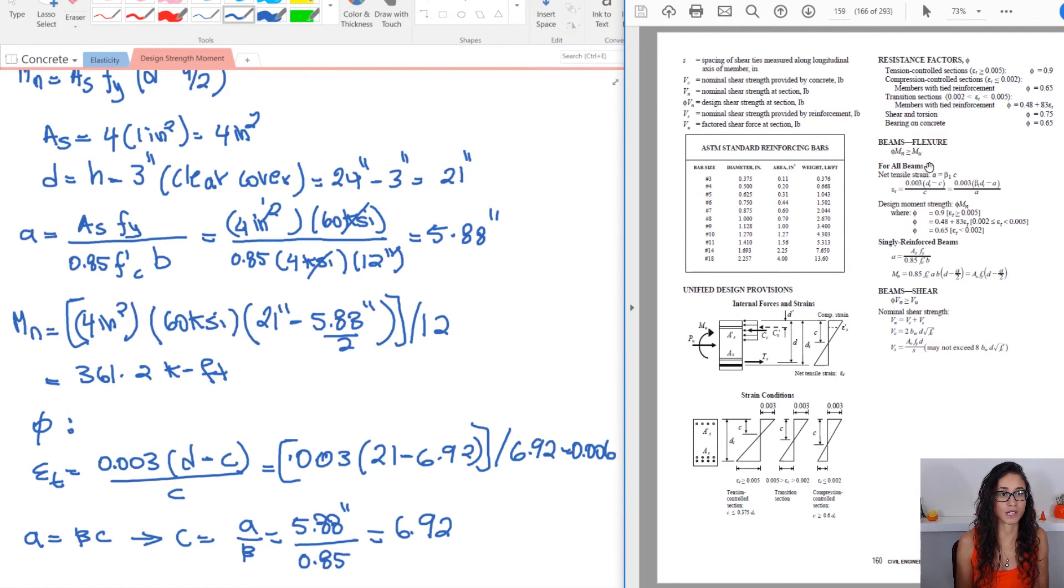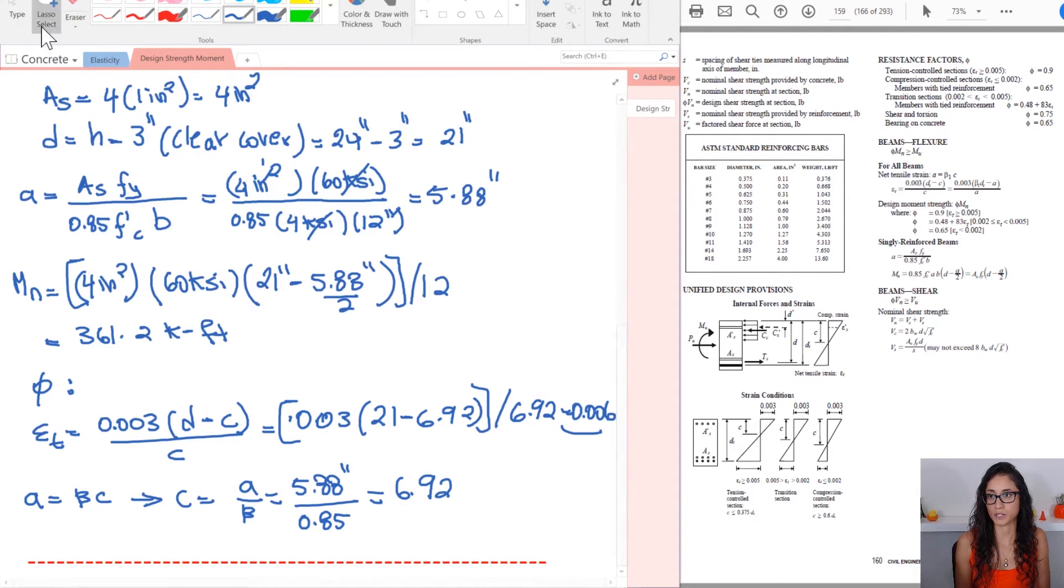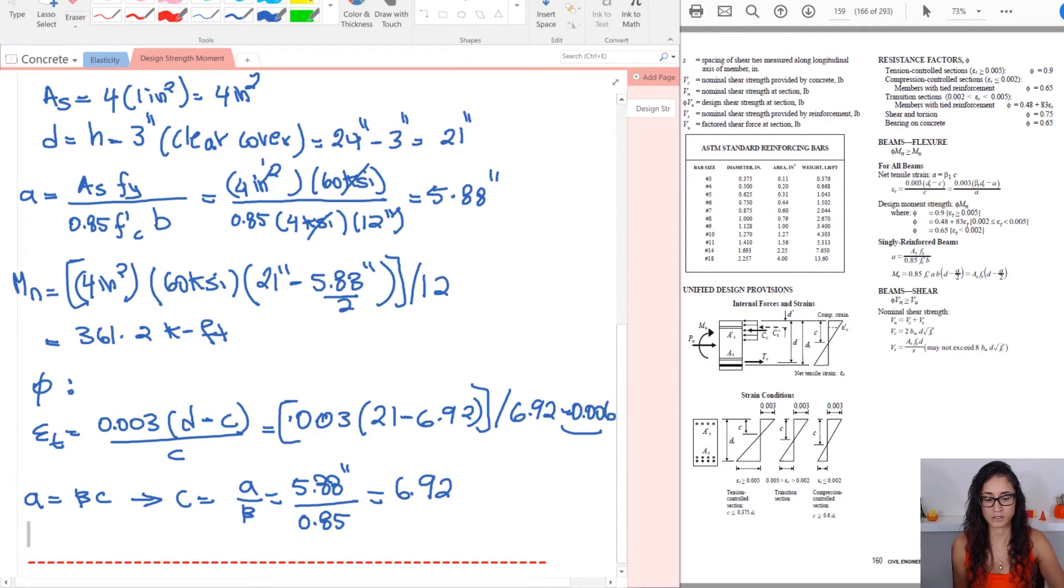So if you look at the equations right here, you have epsilon T, if it's greater or equal to 0.005, your phi is equal to 0.9. So from here, or let me write it here so that we have more space. Let me create more space. So we have the tensile strain is equal to 0.006, which is greater than 0.005. So therefore, phi is equal to 0.9.